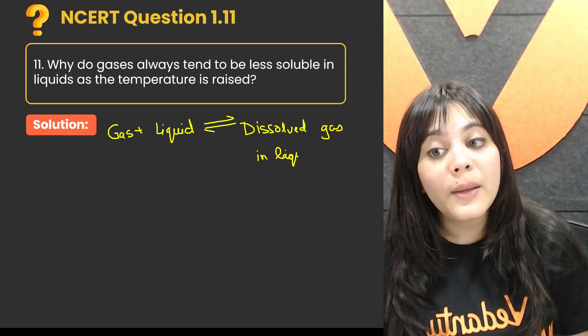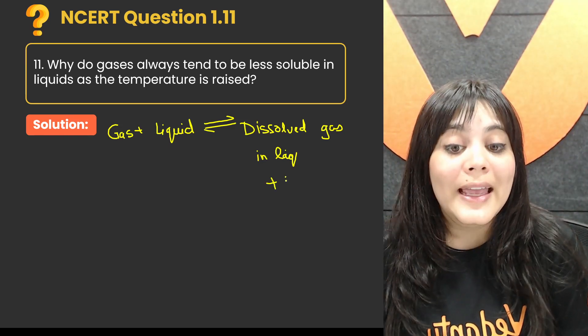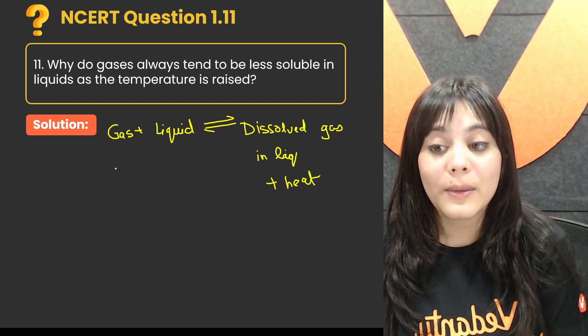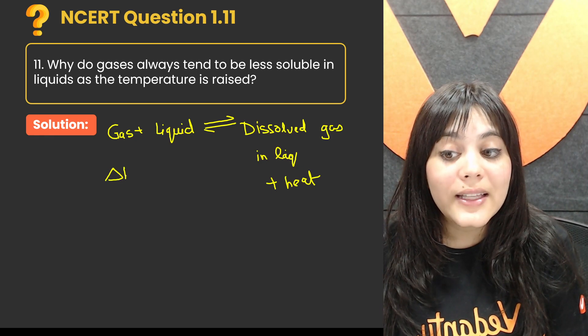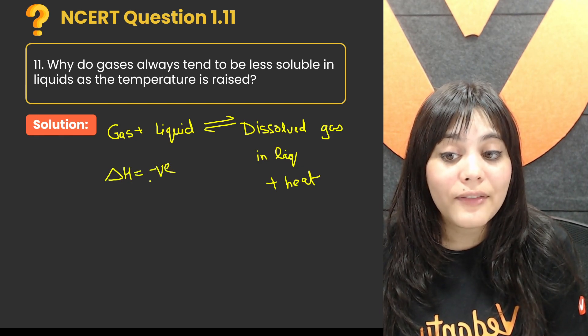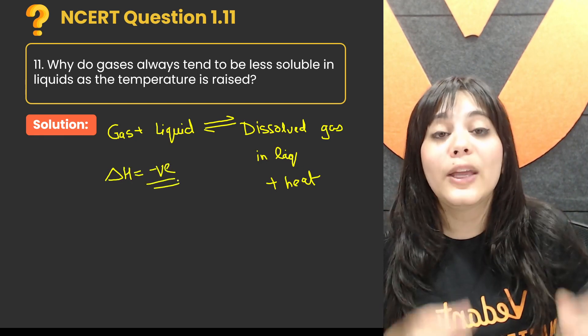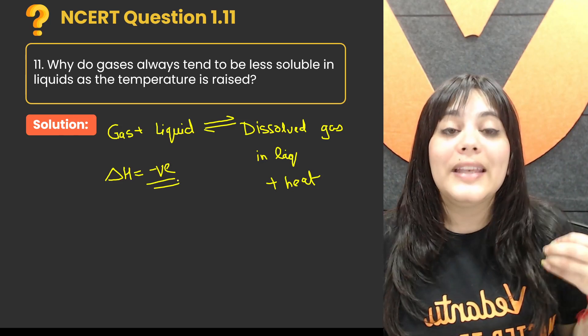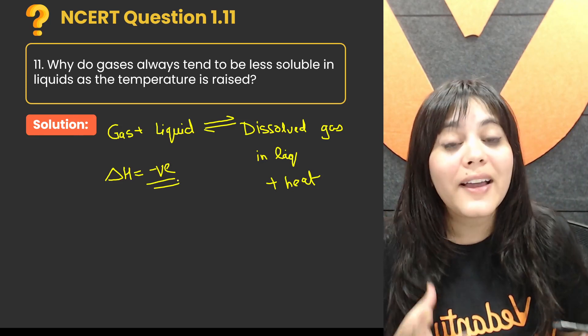And this process of dissolving gas in liquid releases heat. This is an exothermic process, which means ΔH is negative. Every time when we dissolve gas in liquid, it will be an exothermic process with negative ΔH.